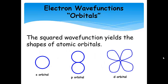We're keeping this very general. This squared wave function actually gives these shapes of atomic orbitals. These are the three main types of orbitals that we're going to discuss in this course.